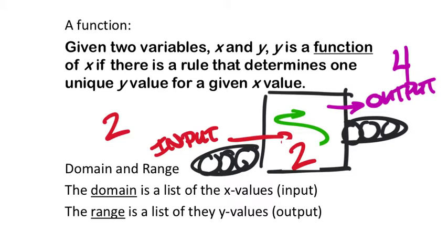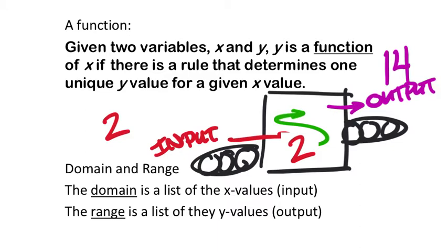Here's the thing — I don't want to see this machine put in a 2 and punch out 14. I put in a 2, I expect a 4 to come out. It's like putting a frozen burrito in your microwave and out comes a pizza. You may like that, but it's not what you expect. Whenever you put in a value, no matter how many times, you should always expect the same value to come out.